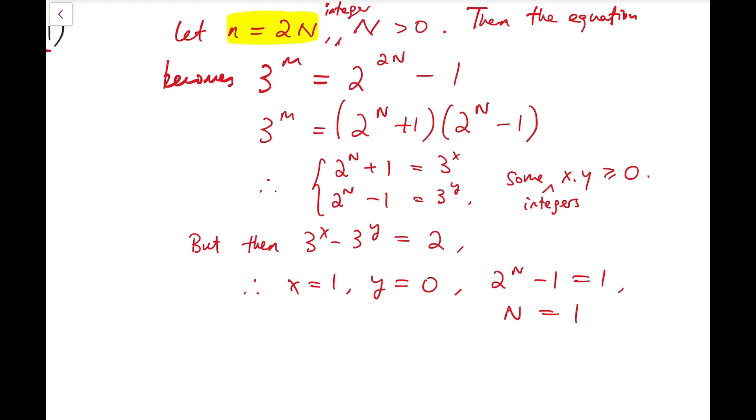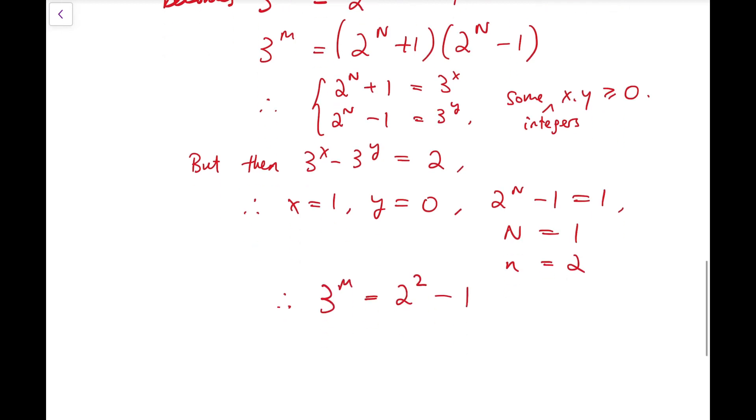to the fact that the small n in the equation that we have set is 2 times this big N, so the small n equals 2, that means 3 to the power of m equals 2 squared minus 1, m equals 1.